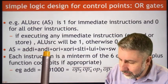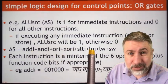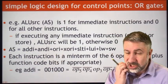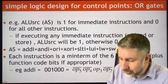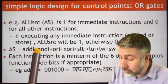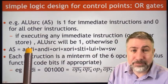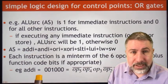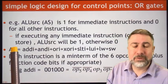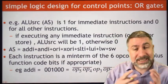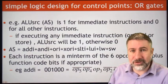The immediate-format instructions are: add immediate, and immediate, or immediate, exclusive-or immediate, set less than immediate, load upper immediate, load word, and store word. These will be true when it's an immediate-format instruction, causing ALU source to be 1. For each instruction, we build a gate that selects for its specific six-bit minterm. For example, add immediate has opcode 001000, so a gate selecting that minterm causes the immediate signal to be true, causing ALU source to select the immediate value. In all other cases, ALU source selects the register value.